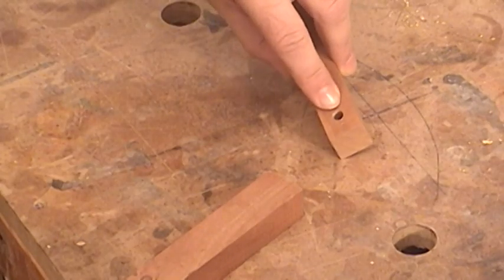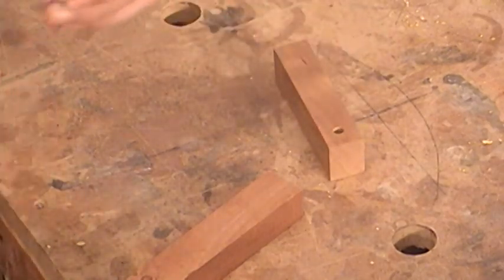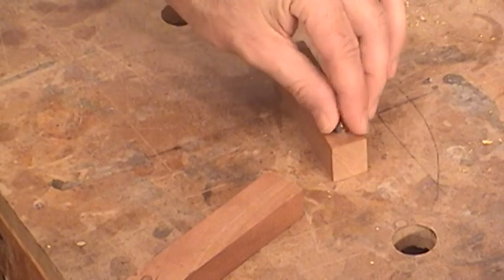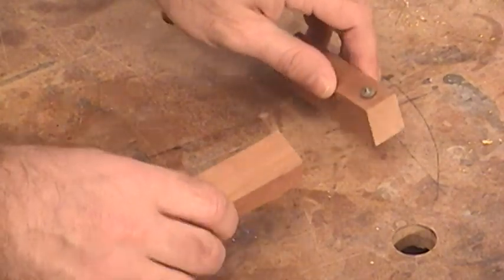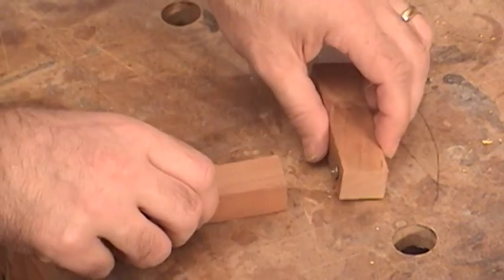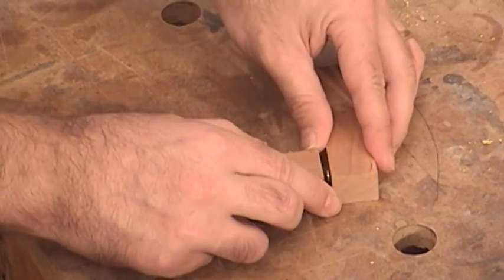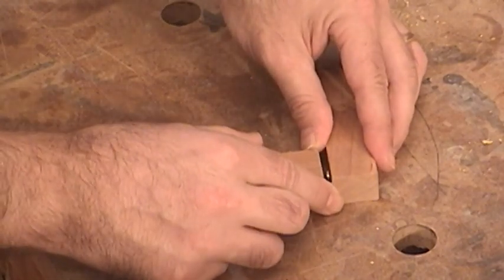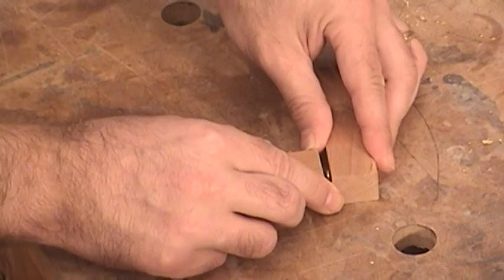I already drilled a hole in one of the sides. Now all I need to do is take a dowel center, place it in the hole that I made, and then just take the other piece, the mating piece, and slide it up against the dowel center to mark the location for the hole for the dowel.